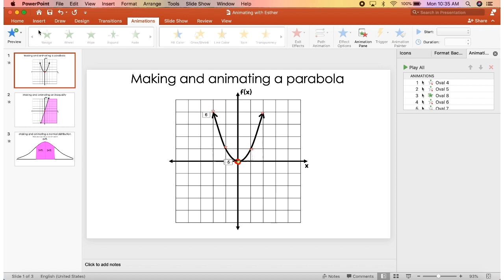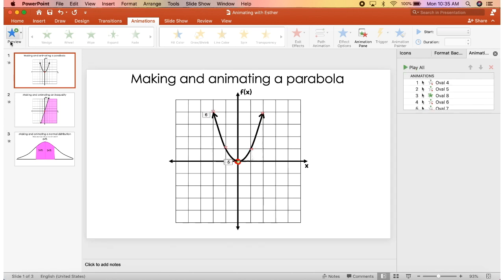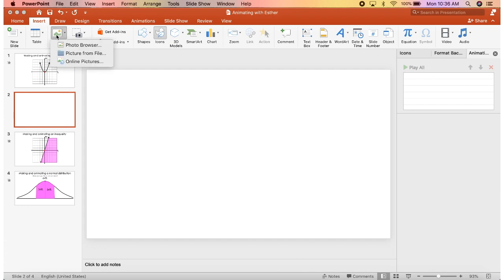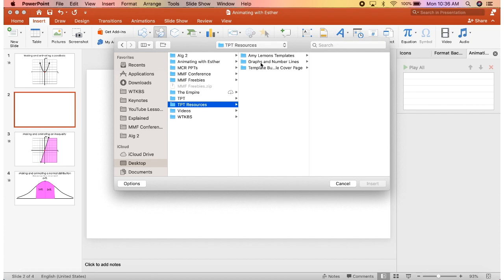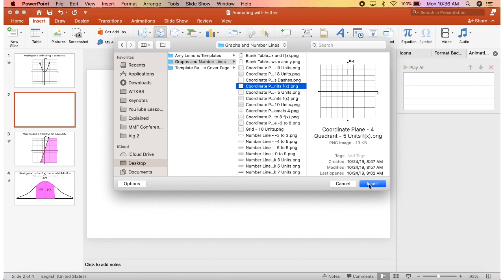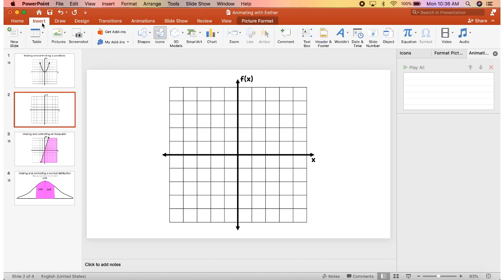Okay, first we're going to be animating a parabola. I'm showing you what the end product is going to look like, and then I'm going to walk you through it. I'm new to using PowerPoint. I usually use Keynote, but I think I figured everything out. The first thing that we're going to do is insert a blank slide. And then after I insert a blank slide, I'm going to insert a picture because I want a grid on the screen.